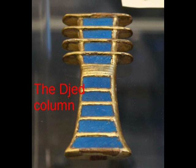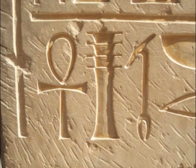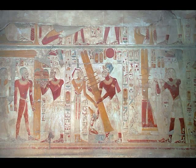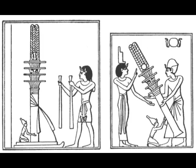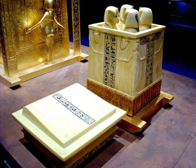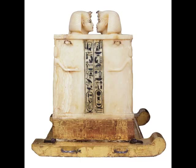The Djed is a column with a broad base narrowing as it rises to a capital, crossed by four parallel lines. It first appears in the pre-dynastic period in Egypt, circa 6000–3150 BCE, and remains a staple of Egyptian iconography through the Ptolemaic period, 323–30 BCE, the last to rule the country before the coming of Rome. Although understood as representing stability, the symbol served to remind one of the close presence of the gods, as it also referenced the god Osiris and so was linked with resurrection and eternal life.